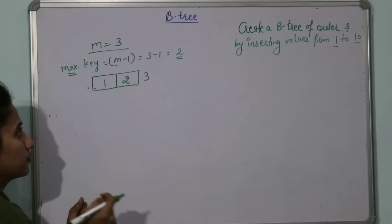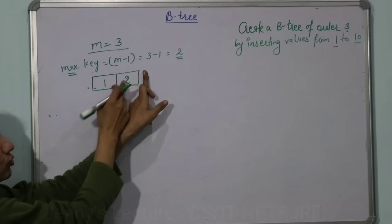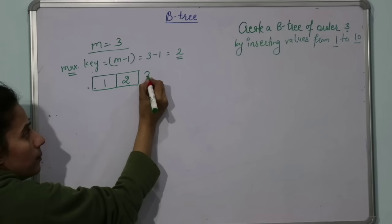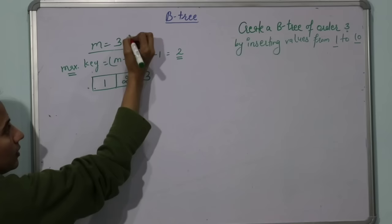You consider 3, then calculate the middle element. The middle or median element would be 2. Now this 2 would be one level up, so your tree becomes: 2 is the new root.